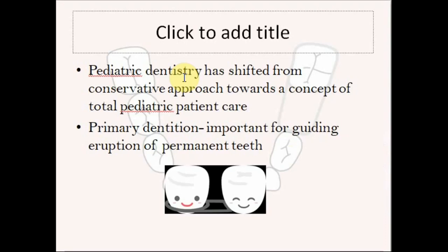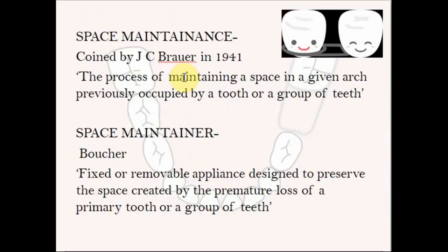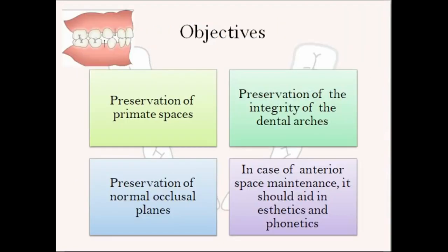One of the major reasons why we need the primary dentition to be in the best of health is because it's important for guiding the eruption of permanent teeth. Space maintenance was coined by J.C. Brower in 1941 — it is the process of maintaining a space in a given arch previously occupied by a tooth or group of teeth. A space maintainer was defined by Voucher as a fixed or removable appliance designed to preserve the space created by the premature loss of a primary tooth or group of teeth.